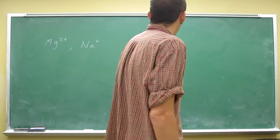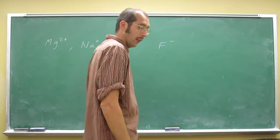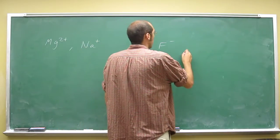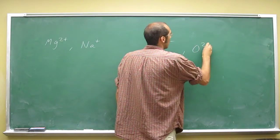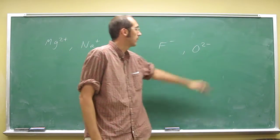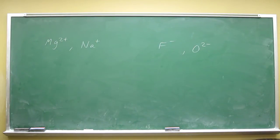In fact, F- is actually isoelectronic with it, too. But if I were to write it, I'd probably do its nearest neighbor, which is O2-. And in fact, all four of these are isoelectronic with each other.